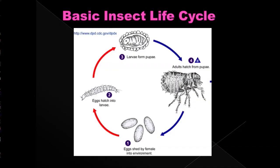Here we have the basic insect life cycle. Most insects are going to start out as an egg, then develop into a series of larvae, then enter the pupa stage, and finally go into the adult stage. The adults will then lay the eggs, and it all starts over from there.